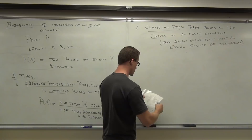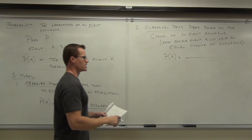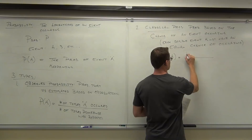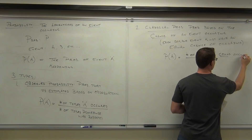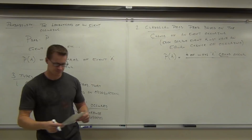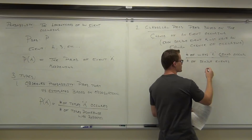You already know classical probability intuitively — that's what we talk about most of the time. The formula looks really similar to observed: instead of the number of times A occurred, we say the number of ways A could occur, divided by the total number of possible outcomes — the total number of simple events.